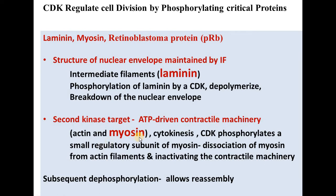The second kinase target is the ATP-driven contractile machinery, in which actin and myosin proteins are involved. This actin and myosin is divided into two equal parts during cytokinesis. When cell division is occurring, CDK phosphorylates a small regulatory subunit of myosin, which causes the dissociation of myosin from actin filaments and inactivates the contractile machinery.